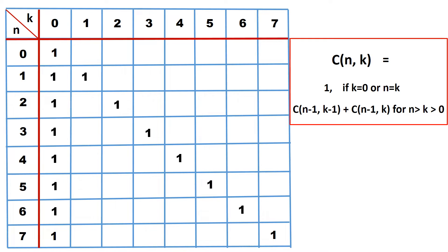Next we have to calculate starting from position (2, 1). For C(2, 1), the computation is C(1, 0) plus C(1, 1), which is 1 plus 1 equals 2. It is very simple. Just observe the formula: it is C(n−1, k−1) plus C(n−1, k). You should be able to understand the remaining cells by following the formula.